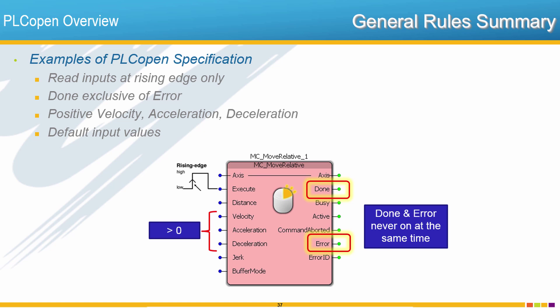Upon execution the motor will produce the motion that's defined by the block, and when this block finishes that command then the done output will turn on. The other rule here is done is exclusive of error, so if there was some reason that the block could not operate, for example one of the parameters was out of range, then there would be an error bit that turns on. Done and error can never be on at the same time. That's just another one of the general rules of PLCopen.